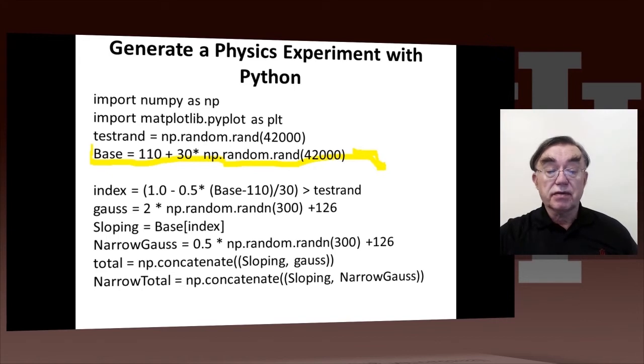But this code here actually generates some inappropriate sloping background, which is called this Python array sloping. This consists of a whole set of events between 110 and 140 GeV distributed so that there's twice as many events near the beginning of the plot at 110 as they are at the end, where it's 30. And that factor 2 is generated ingeniously by this technology here, where we set index to be a number that runs, which is 1.